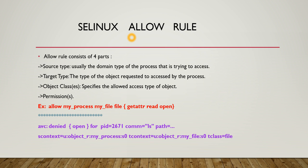In SELinux there is no default user, super user, or root user. Now we'll see what is the SELinux allow rule. The allow rule consists of four parts: first is source type — the domain type of the process trying to access; second is target type — the type of the object requested to be accessed by the process; third is object class — specifies the allowed access type of the object; fourth is permissions. For example: allow my_process to access my_file, with permissions get attribute, read, and open — enclosed within curly brackets.